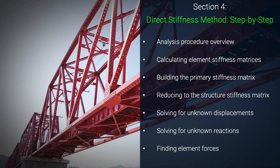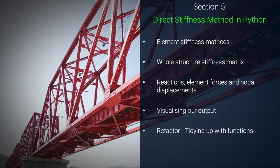Once you understand conceptually how the direct stiffness method works, in section five we'll implement it in Python using a Jupyter notebook. This is our first step along the road to building a completely general truss analysis notebook. Initially we'll just focus on getting our solution running in Python, and towards the end of this section we'll refactor our code to clean it up and make it more readable and reusable.